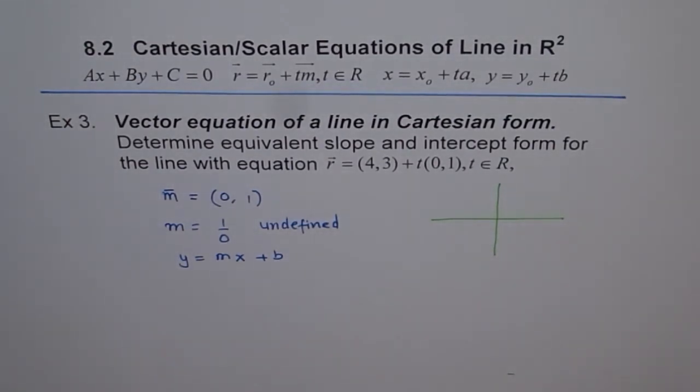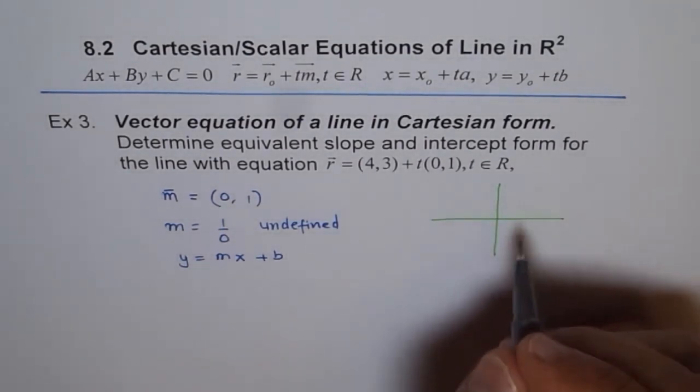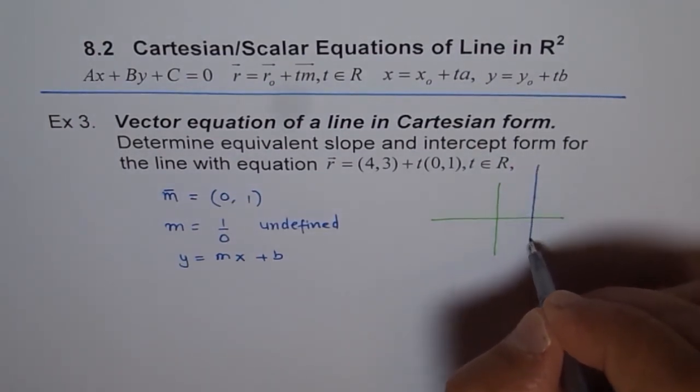Here, the slope is undefined, that means a vertical line. And this vertical line passes through the point (4,3). So let's say this is our point (4,3). Then the vertical line is going like this.